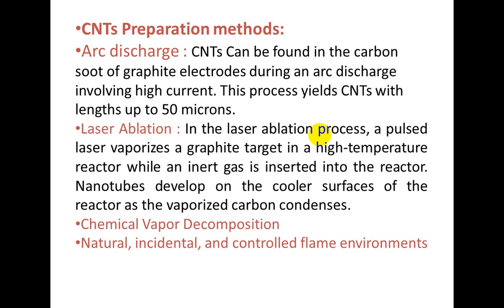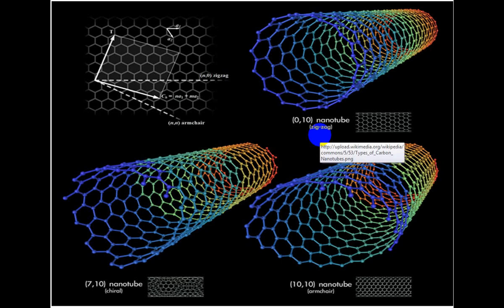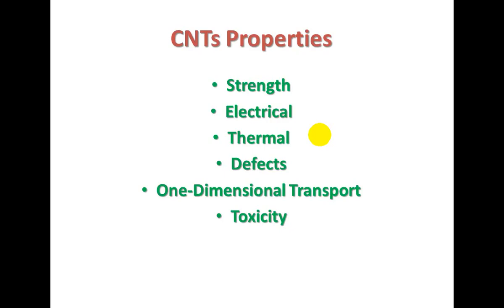These are the methods through which we can prepare CNTs. These examples indicate the strong and cylindrical structure of CNTs. Now, the important topic is the properties of CNTs through which it has secured its place in important applications in our life. These properties are: strength, electrical property, thermal property, and with these advanced properties it also has some defects and demerits, one-dimensional transport property, and toxicity.